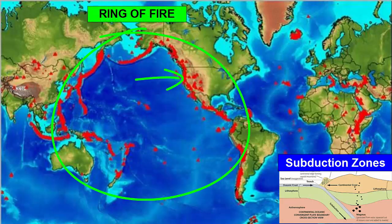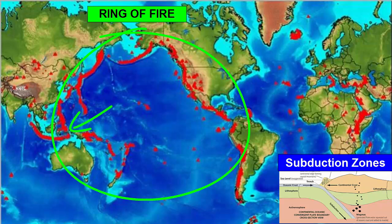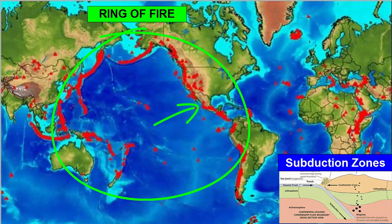Most of the world's examples of subduction zone volcanoes are found in the Ring of Fire around the Pacific Ocean. These include the Cascade Mountains in the northwestern United States, the Aleutian Islands of Alaska, the Kamchatka Peninsula in Russia, Japan, the Philippines, Guam and the Marianas Islands, Indonesia, Papua New Guinea, the Solomon Islands, Vanuatu, Tonga, New Zealand's North Island, the Andes Mountains of South America, and the volcanoes of Central America and Mexico. We also see some subduction zone volcanoes in Italy, Greece, and the Caribbean.